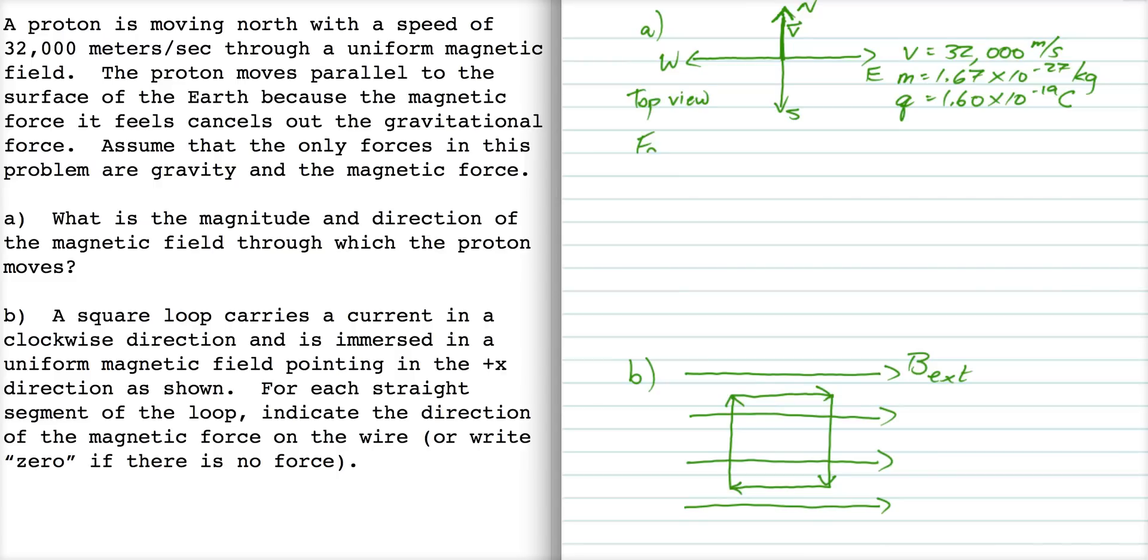So the gravitational force points into the page, because it's mg and it's directed downward. Therefore, the magnetic force must point out of the page, and it's going to have a magnitude of qVB. So our gravitational force looks like that, and our magnetic force looks like that.